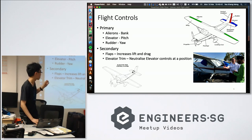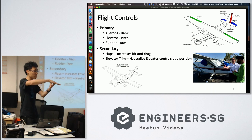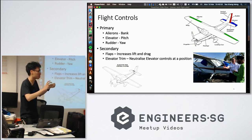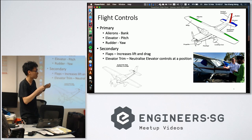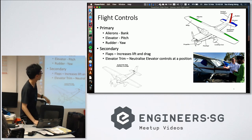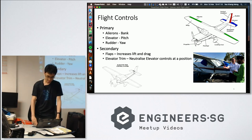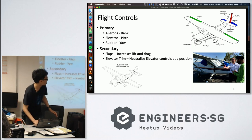The elevator trim is connected to part of the elevator and helps neutralize the elevator control. For example, during a climb, holding the control column continuously would be tiring, so pilots use the trim to center the control around the up position. Then there are flaps, which increase the lift and drag of the aircraft.